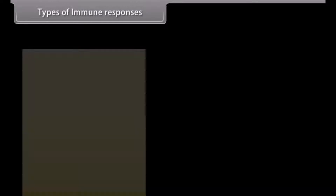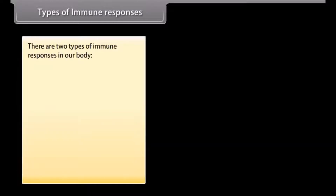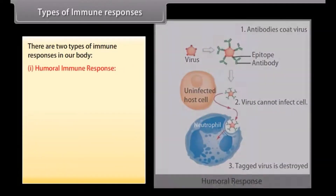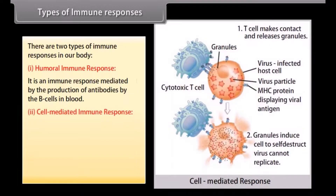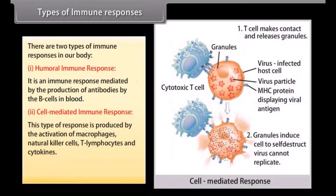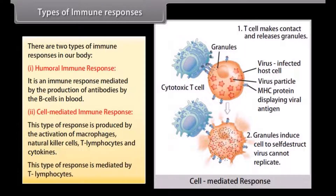There are two types of immune responses in our body. Humoral immune response is an immune response mediated by the production of antibodies by the B cells in blood. Cell-mediated immune response is produced by the activation of macrophages, natural killer cells, T lymphocytes, and cytokines. This type of response is mediated by T lymphocytes.